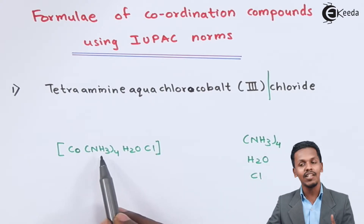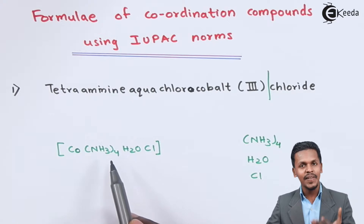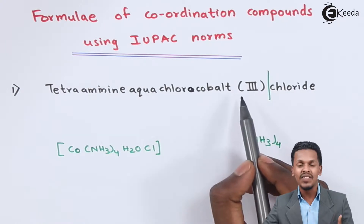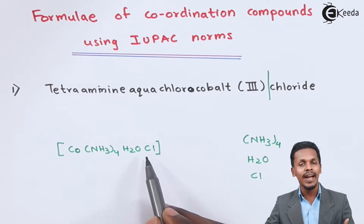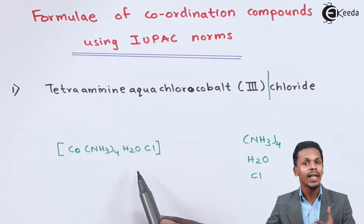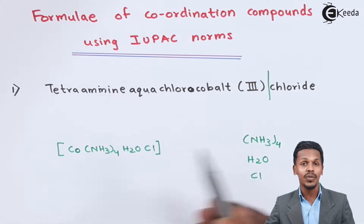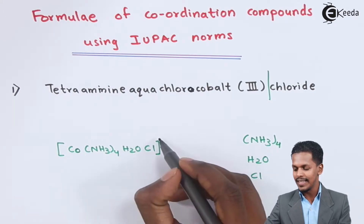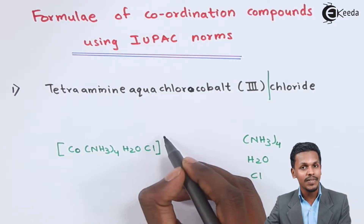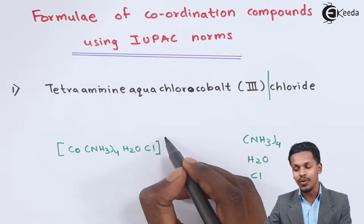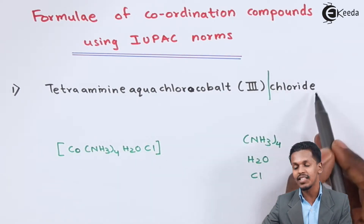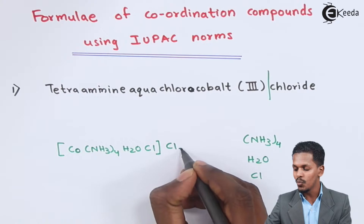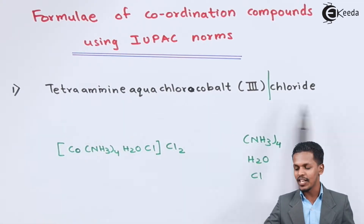We need to satisfy the oxidation number of cobalt as 3 plus. The chlorine atom inside the complex is a negatively charged ligand with an oxidation state of minus 1. When we apply the oxidation number formula, we find this complex has a charge of 2 plus. So the primary entity is chloride, meaning there will be 2 moles of chloride. This gives us the formula for this IUPAC name.